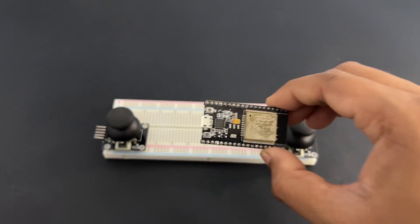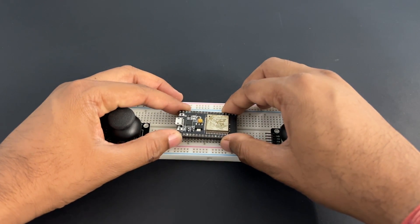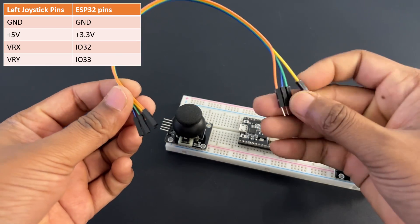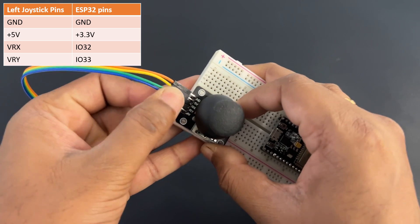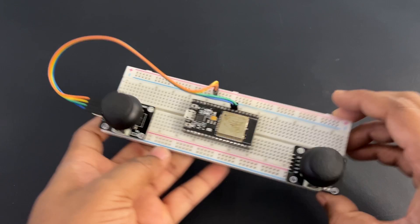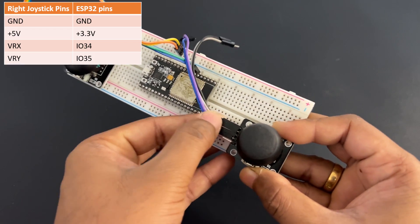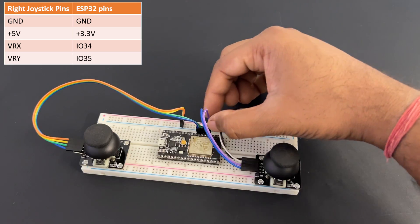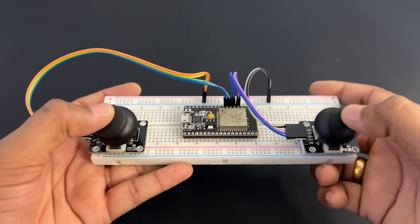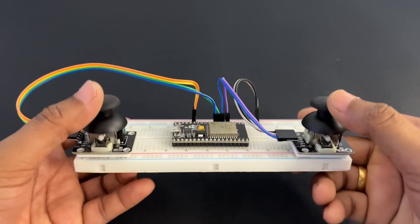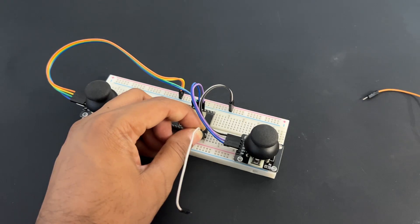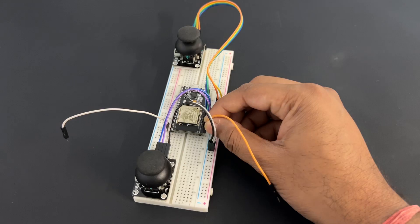Mount ESP32 on breadboard. Now connect right joystick to ESP32 as per table. Provide 3.3V and ground to this breadboard power rail from ESP32 module.